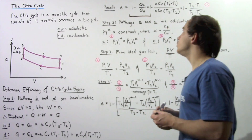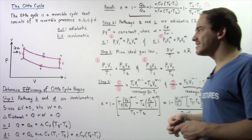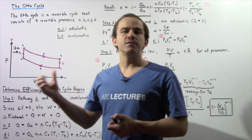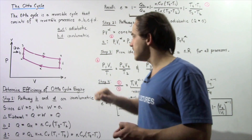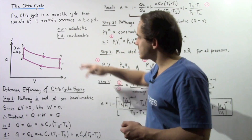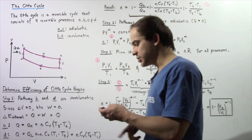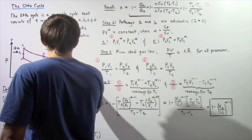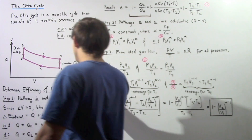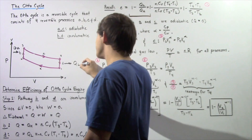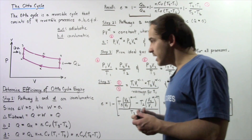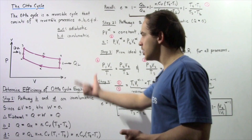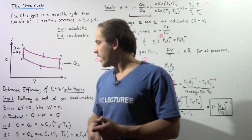What about QL? QL is the quantity of heat that flows out of our system, and this takes place during process D as we go from position 4 to position 1. So, as we go from position 4 to position 1, QL flows out of our system.